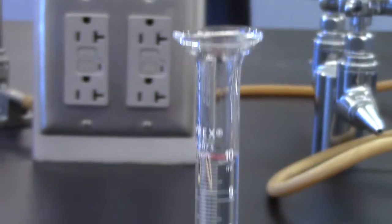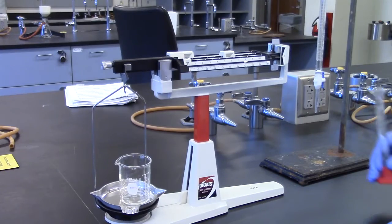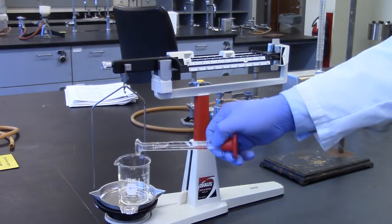Once the graduated cylinder is filled to the 10.0 milliliter mark, transfer to the 100 milliliter beaker and weigh on the balance.